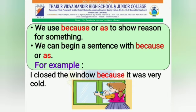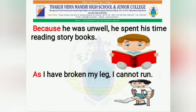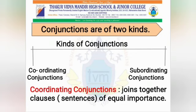We use 'because' or 'as' to show reason for something. We can begin a sentence with 'because' or 'as'. For example: I closed the window because it was very cold. Because he was unwell, he spent his time reading storybooks. As I have broken my leg, I cannot run. Conjunctions are of two kinds: coordinating conjunctions and subordinating conjunctions.